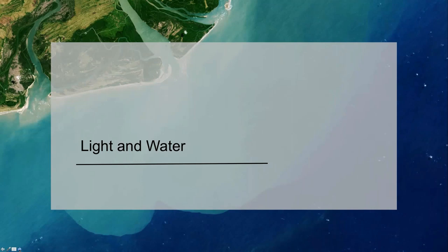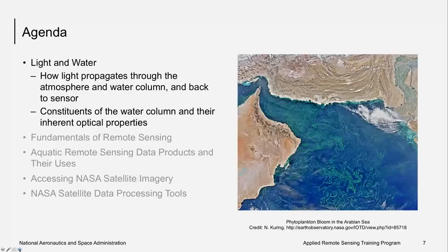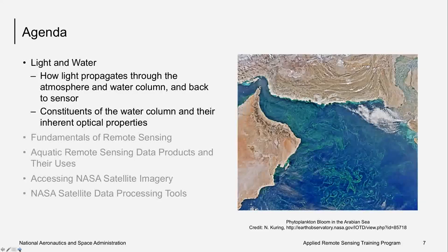To understand remote sensing, we must first have some knowledge of the water and its constituents, and how light interacts with them. In this section, we will cover the nature of light and how it propagates through the atmosphere and water column and back out to the satellite or airborne sensor. We will also talk about the inherent optical properties of the constituents in the water and how they influence the color of light.